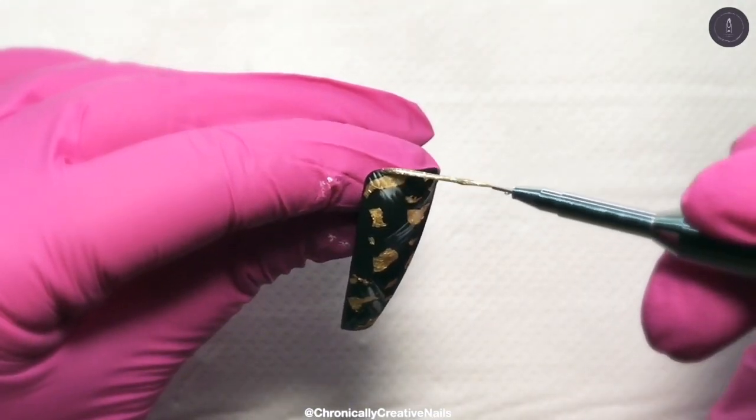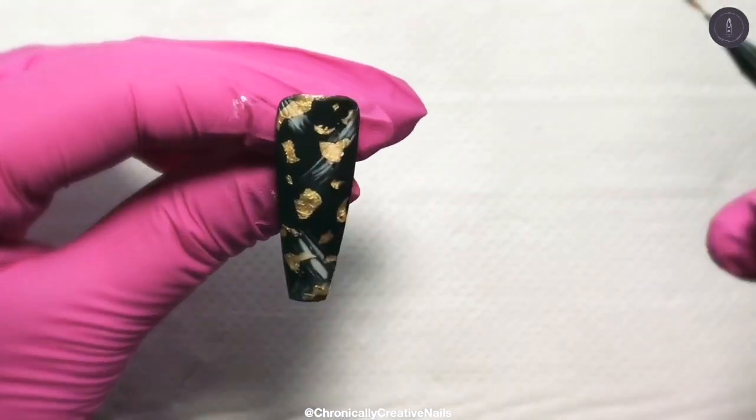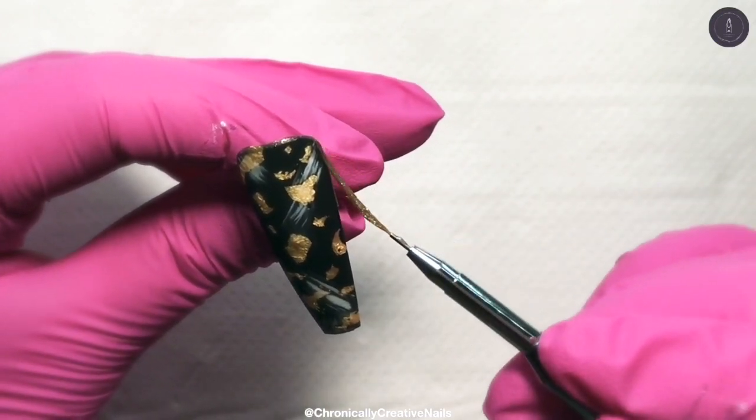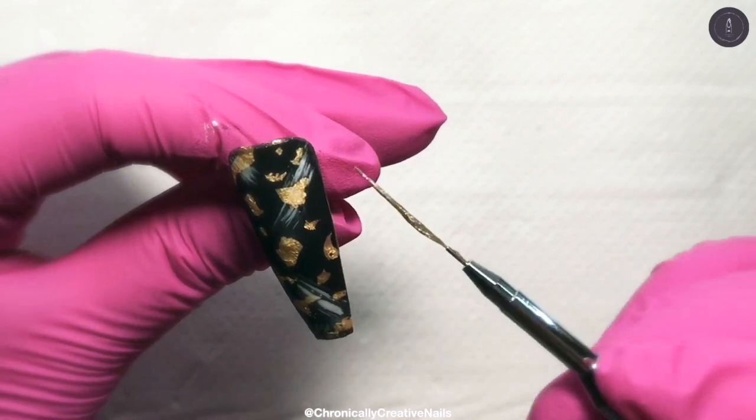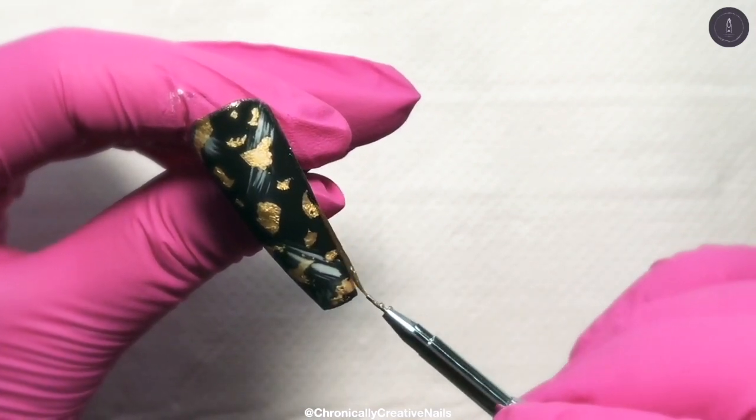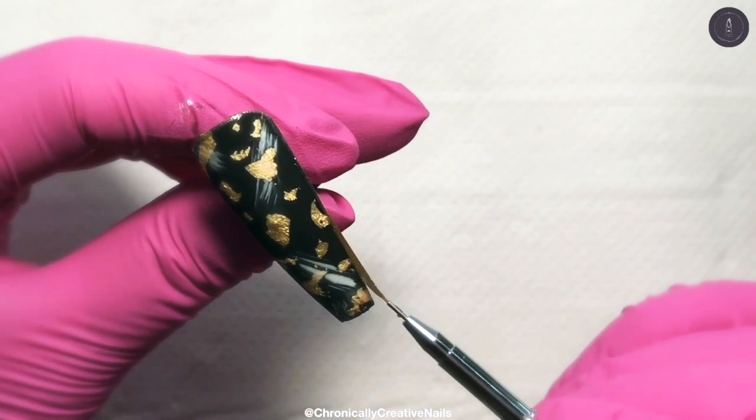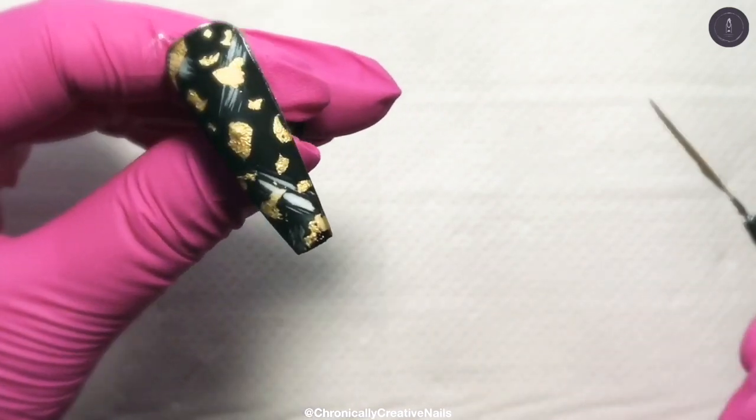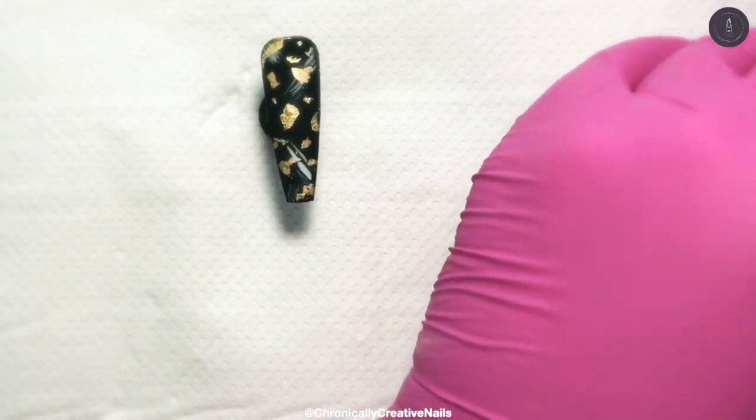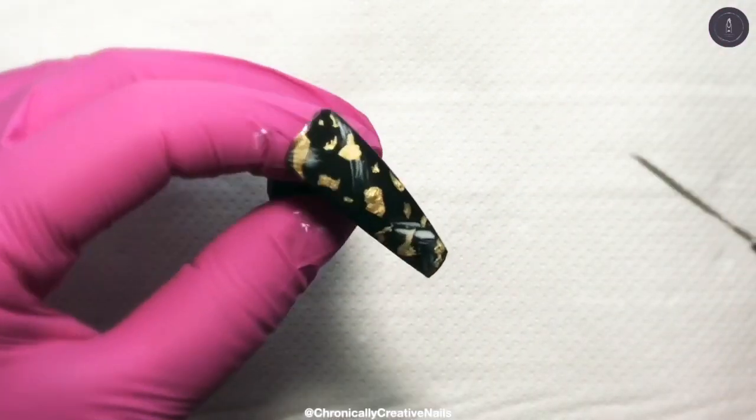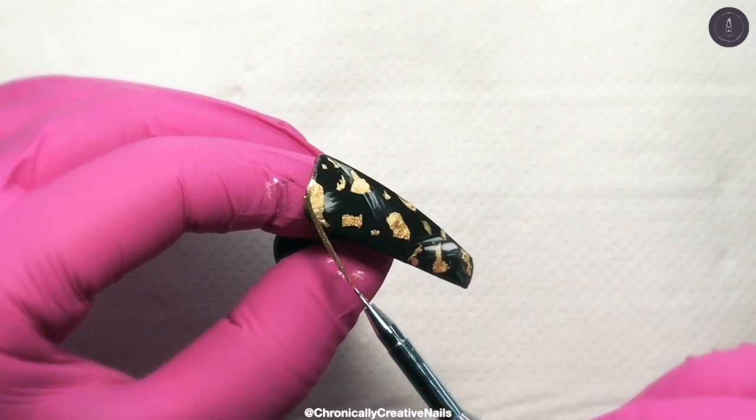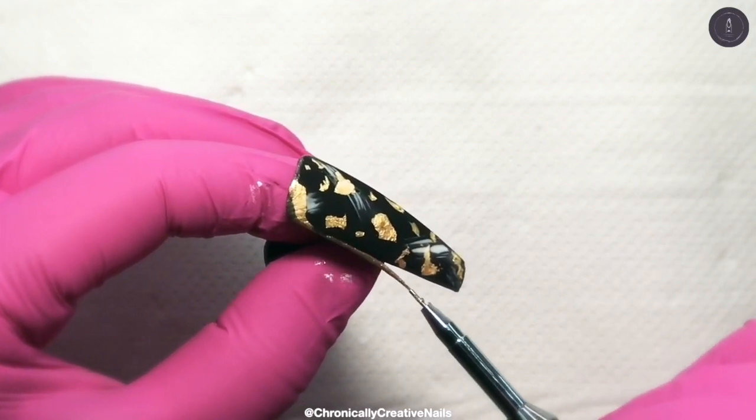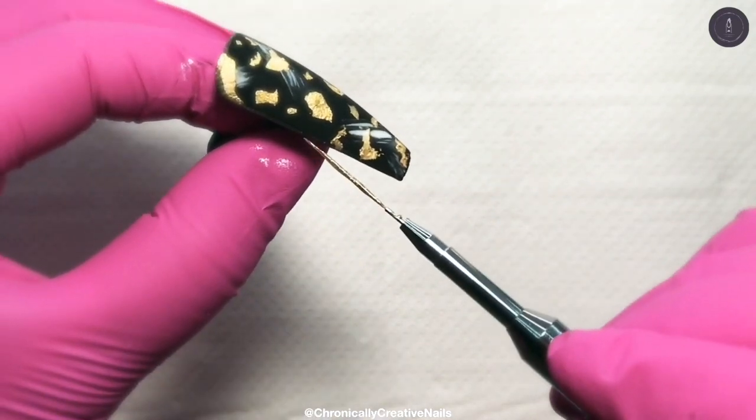So I've taken my Ugly Duckling Striper and Nail Kame embossing gel in the color gold, which is a tack free embossing gel so you don't need to worry about any sticky layers. So you can do this on top of anything. And I'm just going to outline the nail. This is the first time I've used this brush and I have to say I'm in love. So easy to work with.